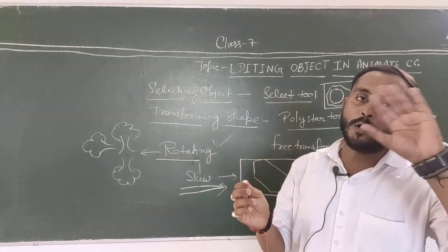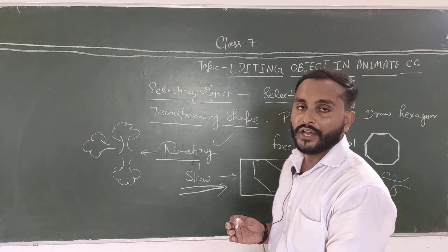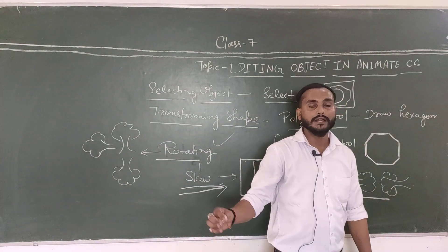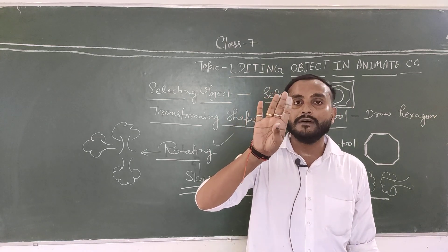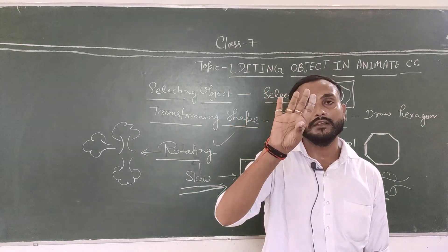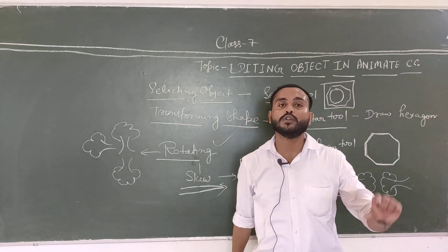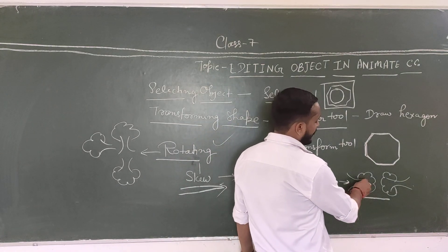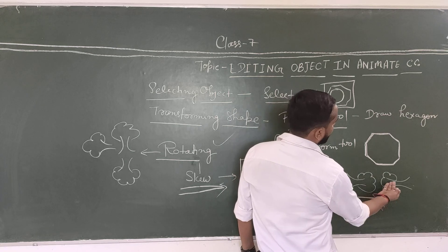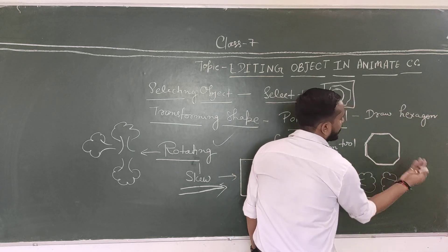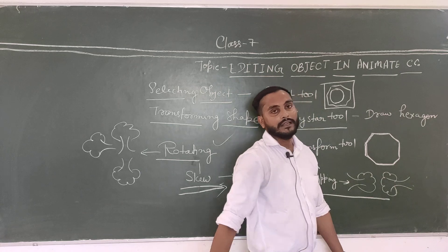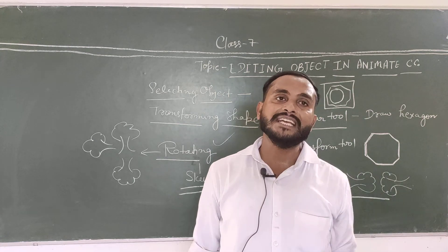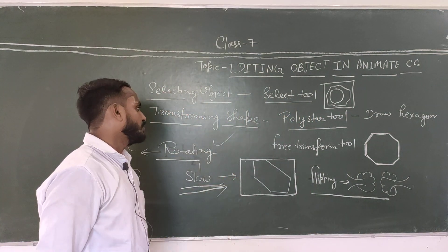अब बात करते हैं flipping की। जैसे मालो यह हमारा हाथ है और हम इसे 180 degree पर change कर दें — that is a flip। जब हम flip करते हैं तो object totally 180 degree पर बदल जाता है। For example, यहाँ एक tree है — जैसे ही हमने इसे flip किया, tree उधर चला गया। Flipping आपने बहुत सारे image editing software में देखा होगा।